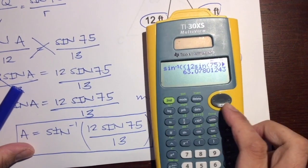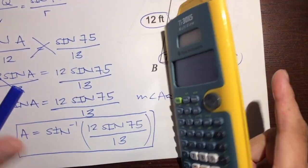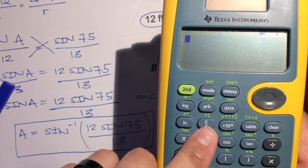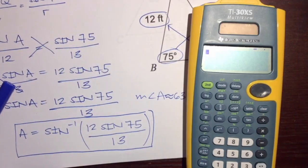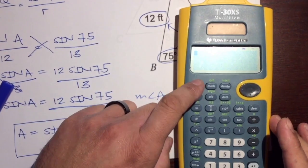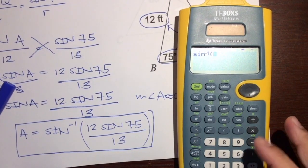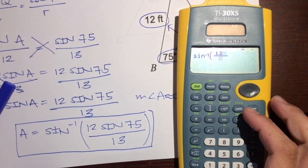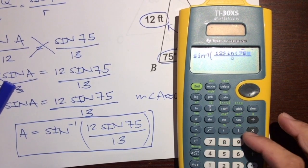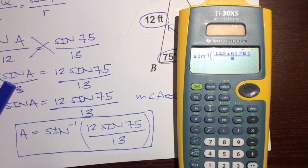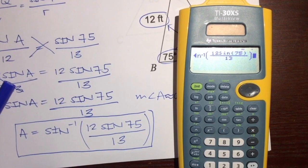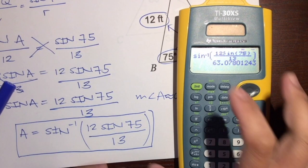The measure of angle A is about 63.078 degrees. Another way to do this is if your calculator has a fraction feature where you can type it in directly — use that feature. Type inverse sine, then 12 times sine of 75 in the numerator, over 13, and you should get the same answer.